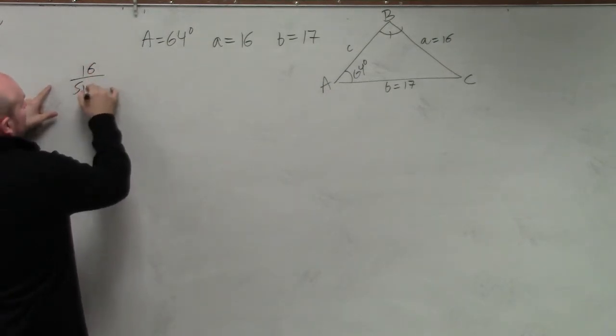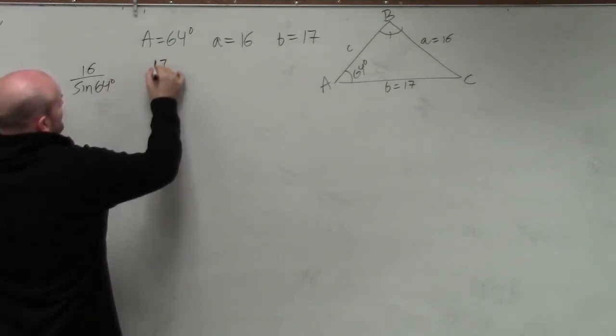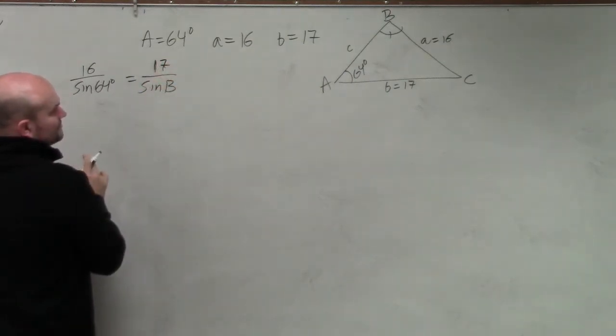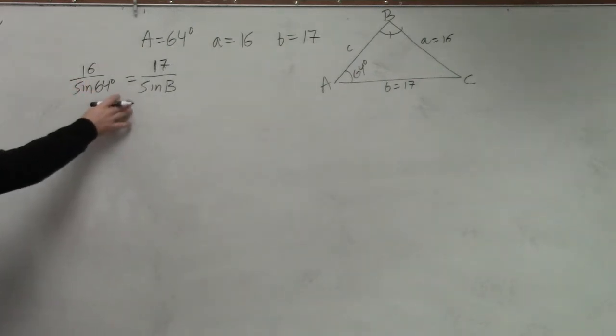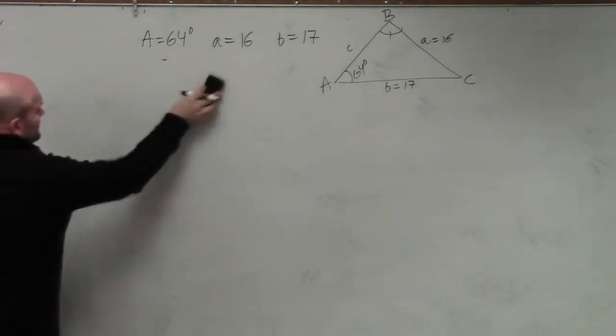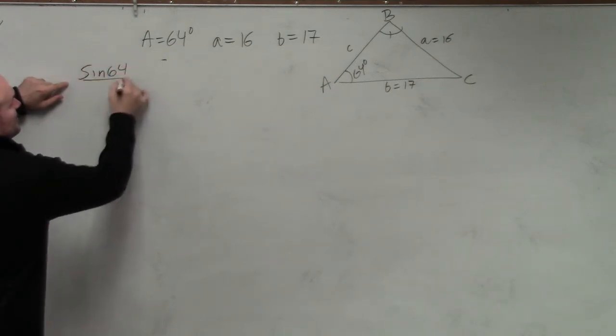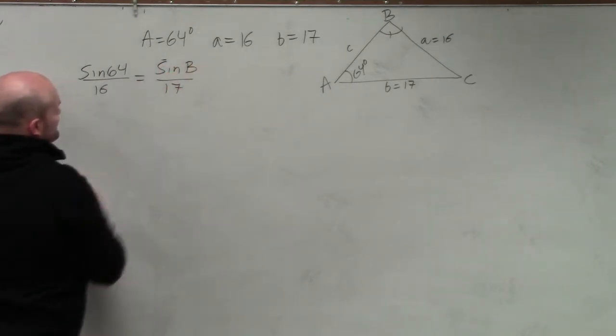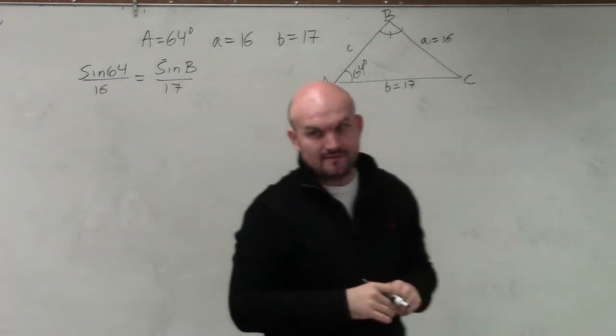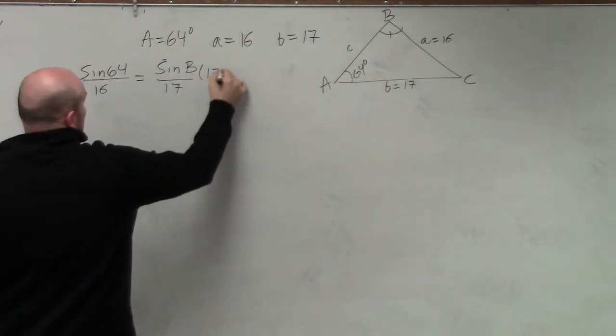So I'd say 16 over the sine of 64 degrees equals 17 over the sine of B. But do you guys see if we're writing it this way, then I have to solve for B in the denominator. I really don't want to do that. I would much rather rewrite them, flip it. So I'm going to rewrite this as sine of 64 over 16 equals sine of B over 17. Do you guys follow me on that? It's much easier to solve for it this way because now, to solve for B, I just need to multiply by 17 on both sides.